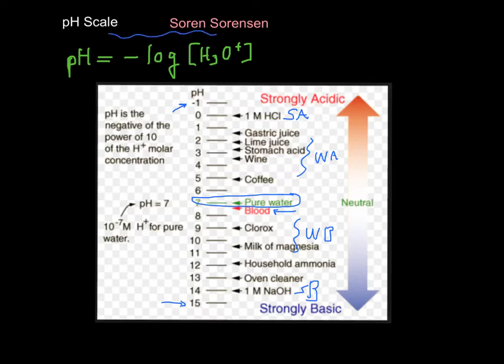The way you calculate pH is it's negative the log of the hydronium ion concentration or the hydrogen ion concentration. So you just hit on your calculator, negative log, and then whatever. So pH depends on the amount of H3O+ in solution.